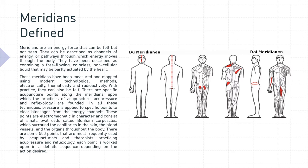With practice, they can also be felt. There are specific acupuncture points along the meridians upon which the practices of acupuncture, acupressure, and reflexology are founded. In all these techniques, pressure is applied to specific points to clear blockages from the energy channels. These points are electromagnetic in character and consist of small oval cells called Burnham corpuscles, which surround the capillaries in the skin, the blood vessels, and the organs throughout the body.